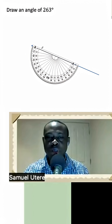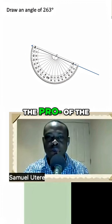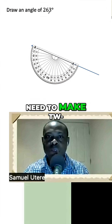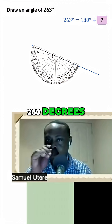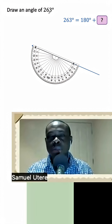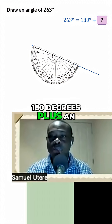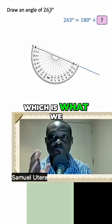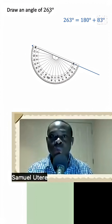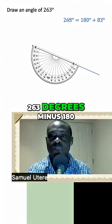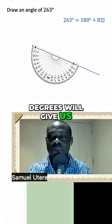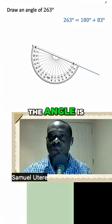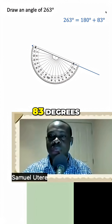To place our protractor upside down, we want to be able to measure from the end of the line segment the extra angle we need to make 263 degrees. We know that 180 degrees plus an unknown angle is equal to 263 degrees, so 263 degrees minus 180 degrees will give us the angle that we actually need. In this case, the angle is 83 degrees.